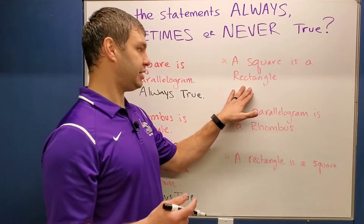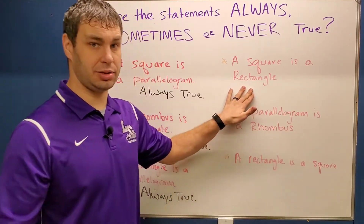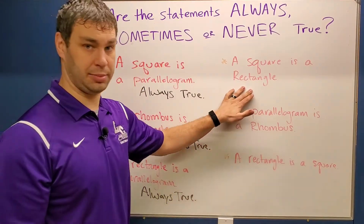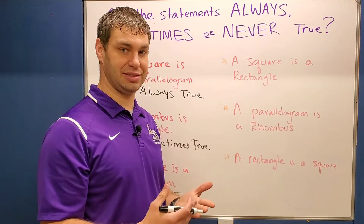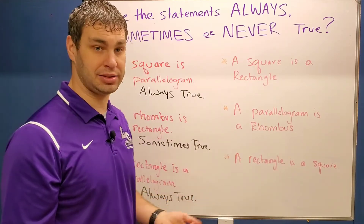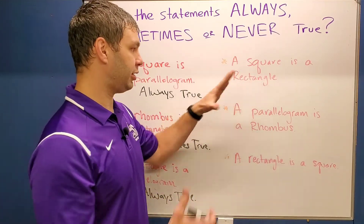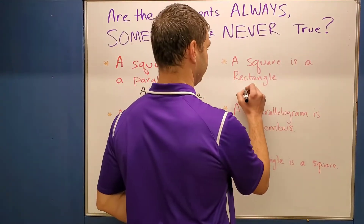The next one says a square is a rectangle. This is always true. Remember, a square by definition is both a rectangle and a rhombus, so a square is always going to be a rectangle.